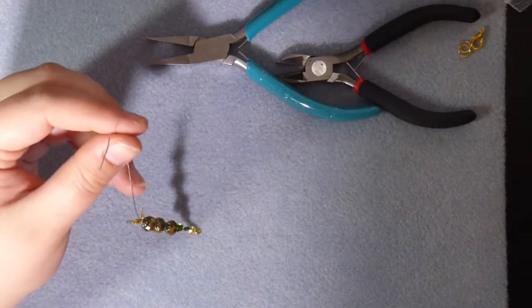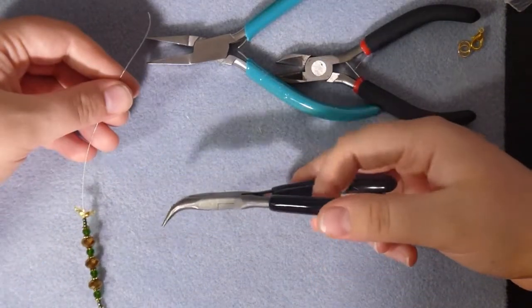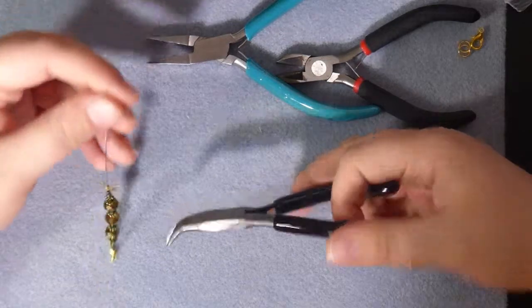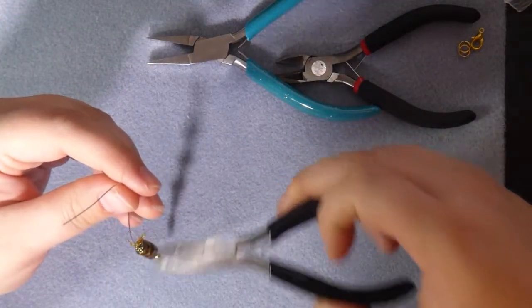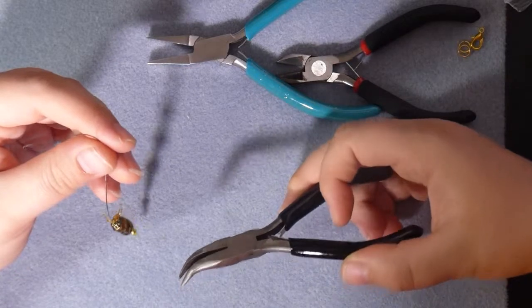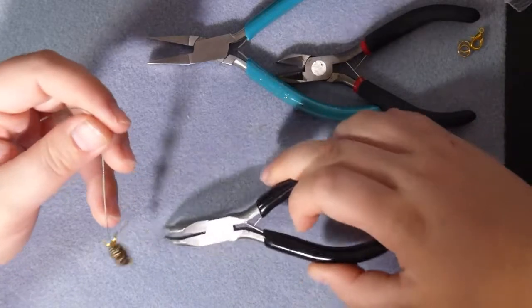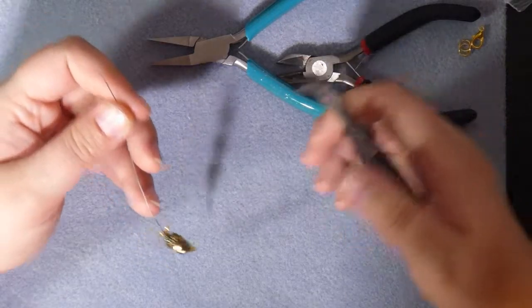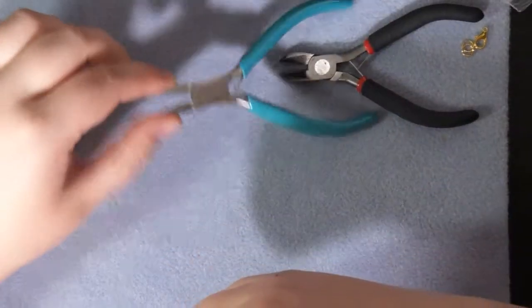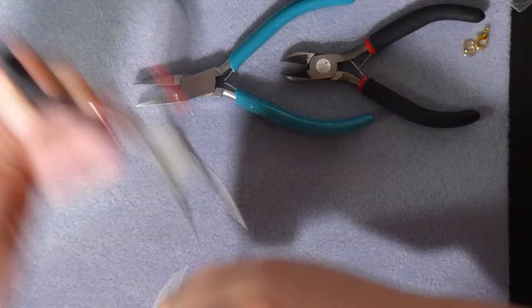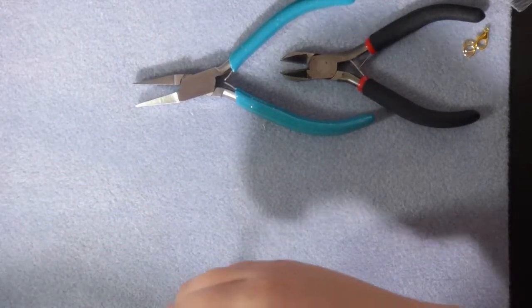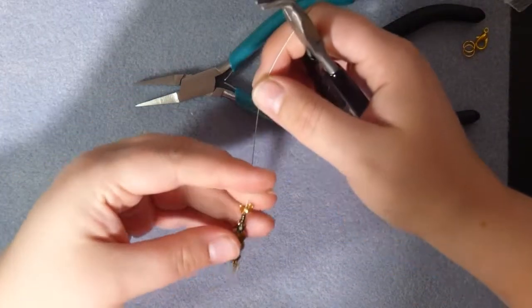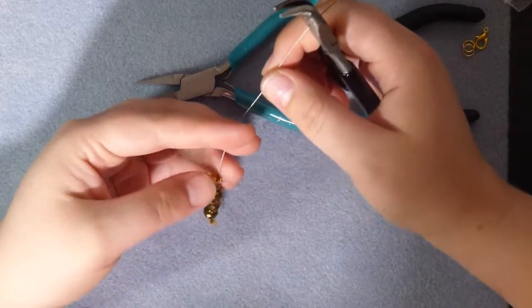Now I like to use these curved nose pliers for this because it allows me to get right in to where I want to crimp my crimp bead, but you don't have to. You can use whatever pliers work best for you - you can use your flat nose, your small round nose pliers, whatever pliers you've got and whatever pliers you like to use.